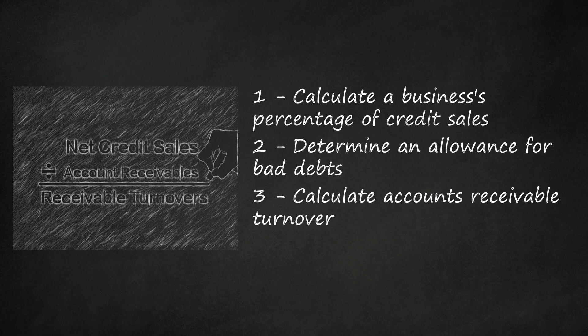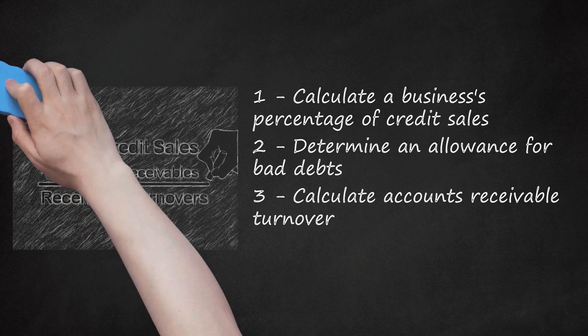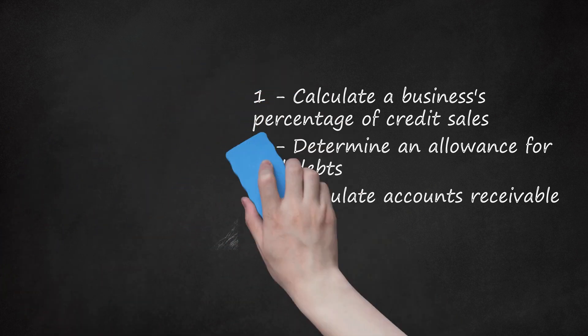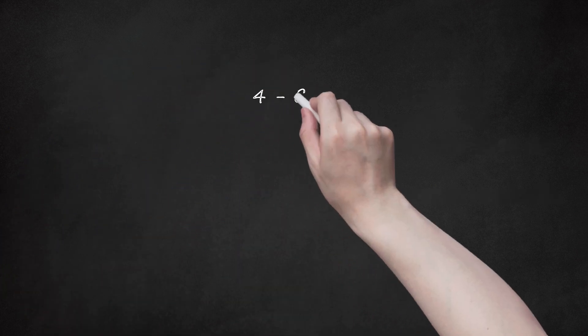However, a very high ratio may mean that the business is using overly strict collection policies. For example, if a business had average accounts receivable of $50,000 for the year and $600,000 in net credit sales for the same year, its receivable turnover would be 12. This result may be relatively high or low, depending on the industry the business operates in.